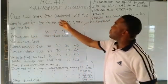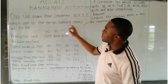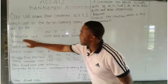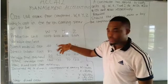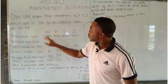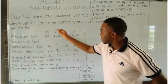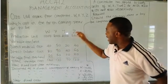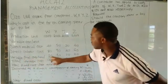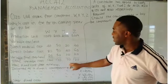The question says: a company makes four components W, X, Y, and Z, whose costs in the forthcoming year are as follows. The production units are 1,000 for W, 2,000 for X, 4,000 for Y, and 3,000 for Z. The variable cost per unit: direct material cost is 40 for W, 50 for X, 20 for Y, and 40 for Z. Direct labor cost is 80, 90, 40, and 60 respectively. Variable production overhead is 20, 30, 10, and 20. The total variable cost is 140 for W, 170 for X, 70 for Y, and 120 for Z.